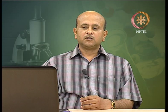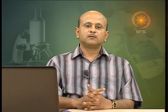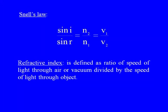The relationship between the angle of incidence and angle of refraction is given by Snell's law: sin i / sin r = n2 / n1, where n2 and n1 are the refractive indices of the two media, and i and r are the angles of incidence and refraction. Refractive index is defined as the ratio of the speed of light through air or vacuum divided by the speed of light through the object. Snell's law explains how light bends as it passes from one medium into another.